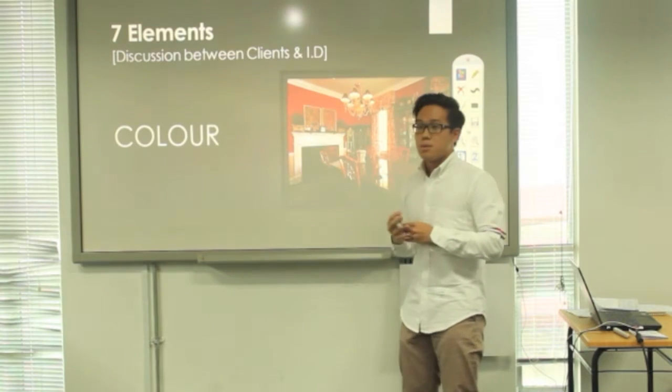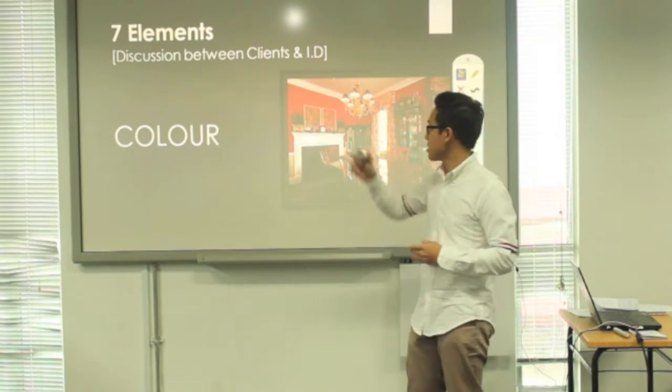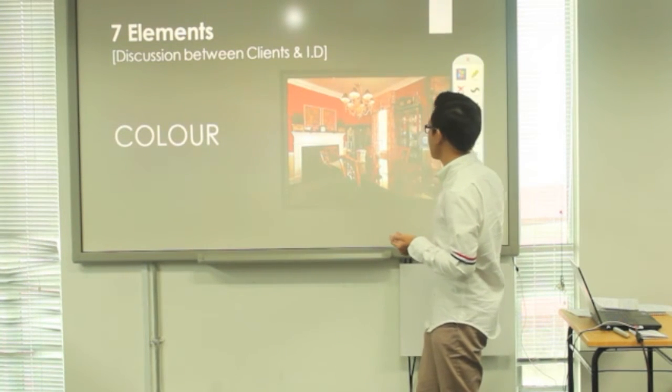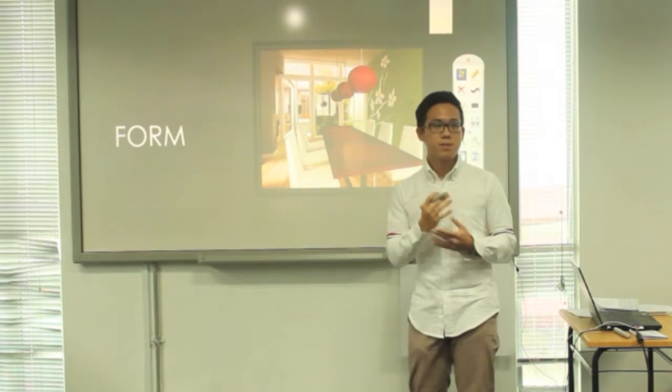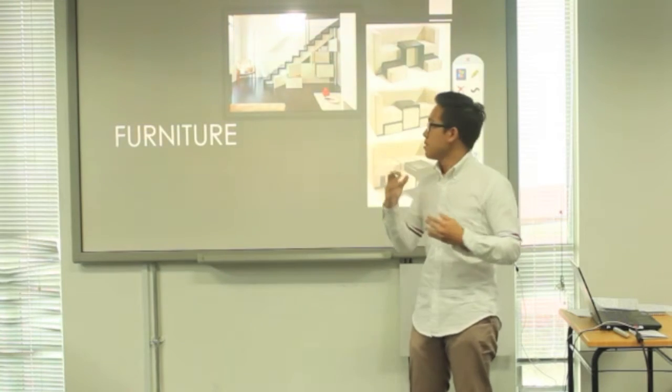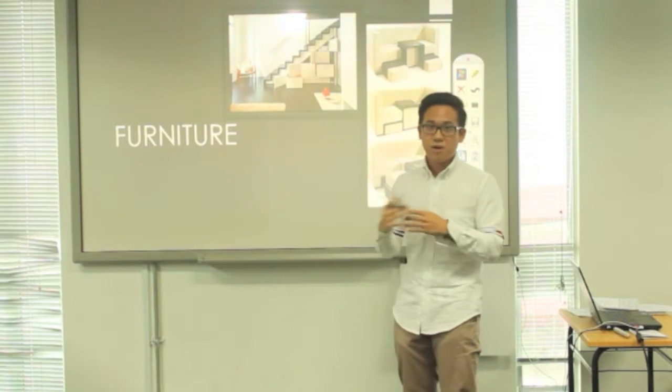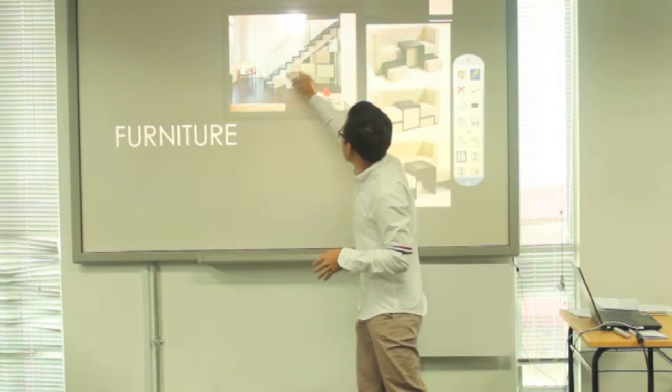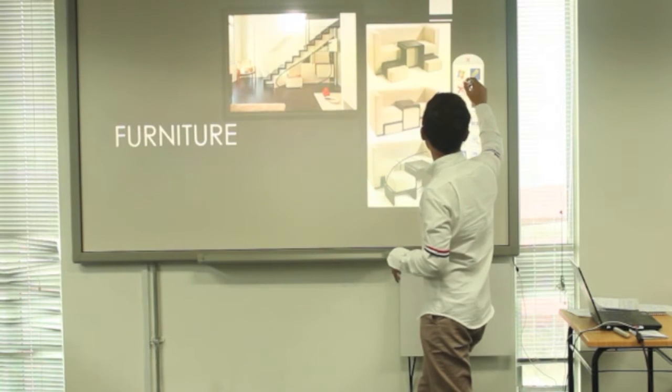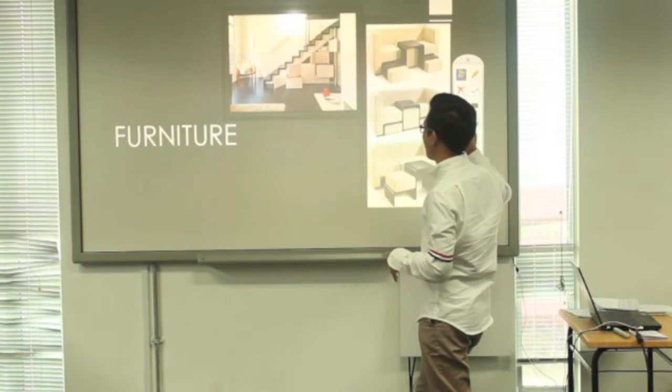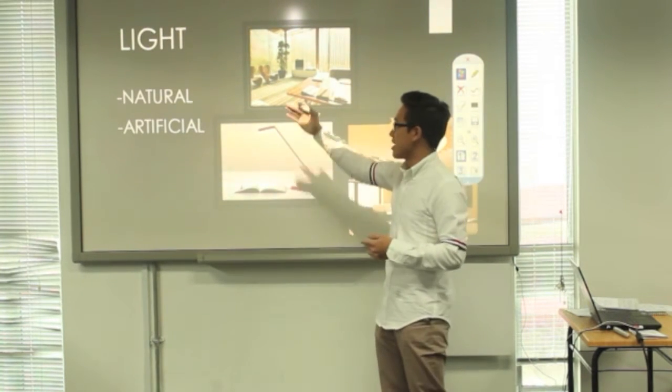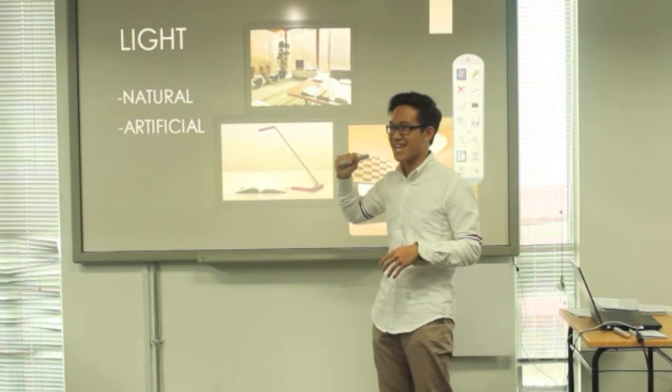These are elements that will be discussed between interior designers and clients. The first one is colors. The colors is about the colors of the floors, the colors of wallpapers and finishes and so on. The second one is form. Form is about the shape and outline of furniture or objects. The interior designer will discuss about the function of the furniture, like what special functions do you need. The next one is light. The lighting can be divided into natural lighting and artificial lighting.